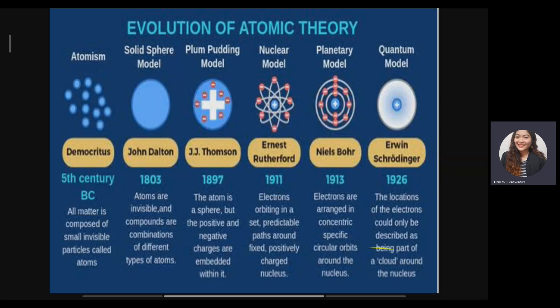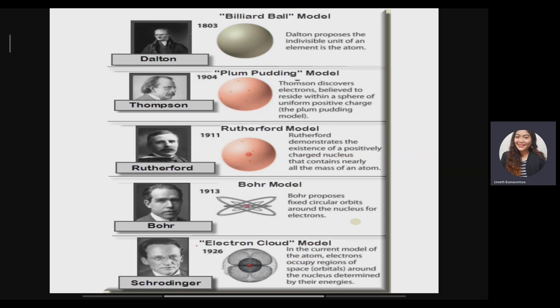Here are images of the scientists who made great contributions to our atomic models: John Dalton with the billiard ball model, JJ Thompson with the plum pudding model, Ernest Rutherford with the nuclear model, Niels Bohr with the planetary model, and Erwin Schrödinger with the electron cloud model.